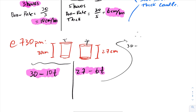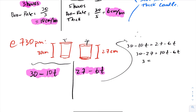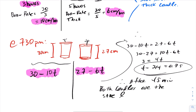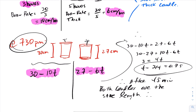Setting the lengths equal: 30 minus 10t equals 27 minus 6t. Subtracting 27 from both sides and adding 10t to both sides gives 3 equals 4t, so t equals 3/4, which is 0.75 hours — that's 45 minutes. Since we started tracking from 7:30 PM, adding 45 minutes brings us to 8:15 PM. At 8:15 PM, the thick candle and the thin candle will be the same length.